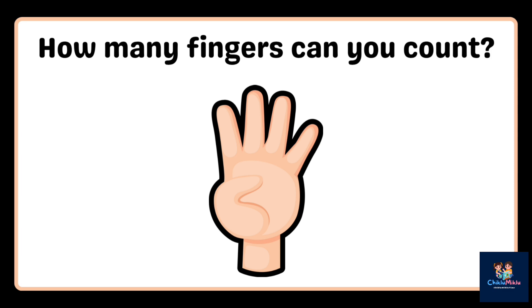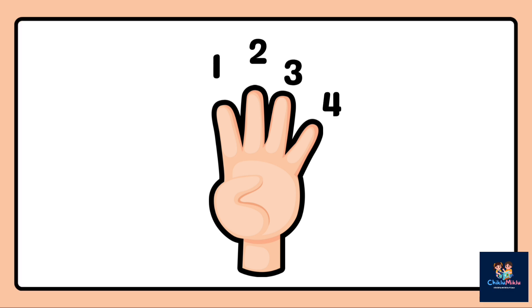How many fingers can you count? One. Two. Three. Four. How many fingers? One. Two. Three. Four. Number? Four. Number? Four. How many? Four.